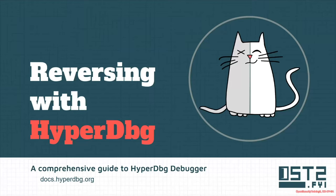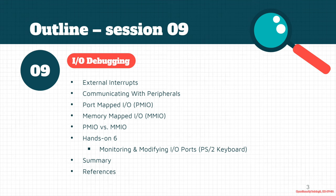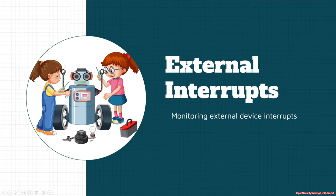Hi everyone, welcome to the next part of the tutorial on reversing with HyperDbg. In this part we're going to talk about IO debugging. Here is a brief outline: we'll cover external interrupts, communicating with different peripherals, port-mapped IO (PMIO), memory-mapped IO (MMIO), a comparison of PMIO and MMIO, and a hands-on where we monitor and modify IO cores for a PS2 keyboard.